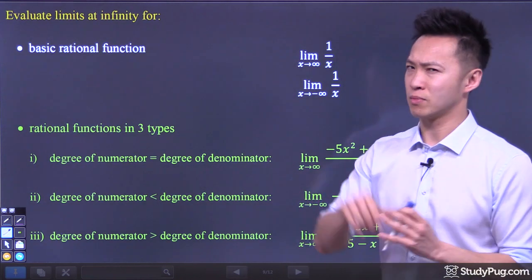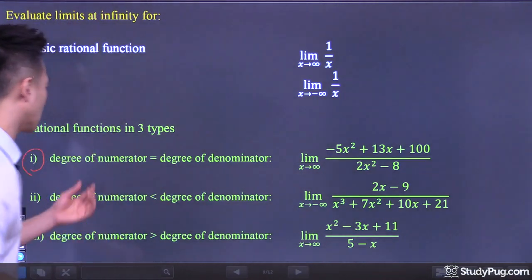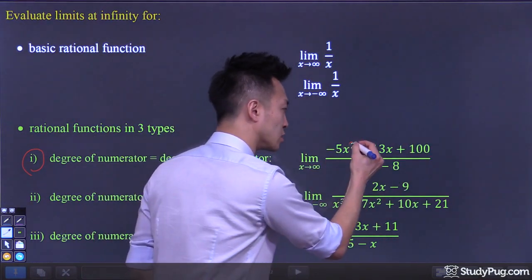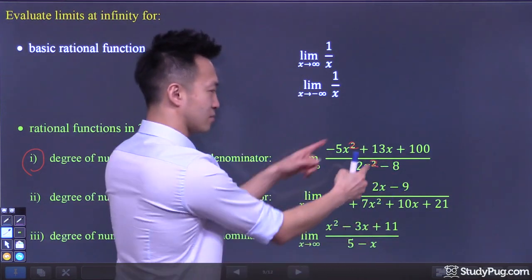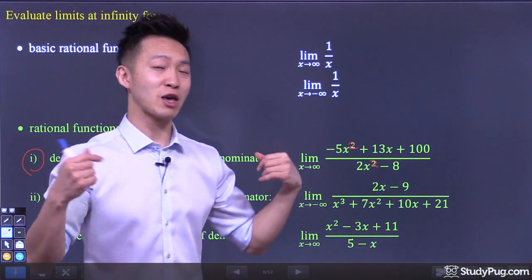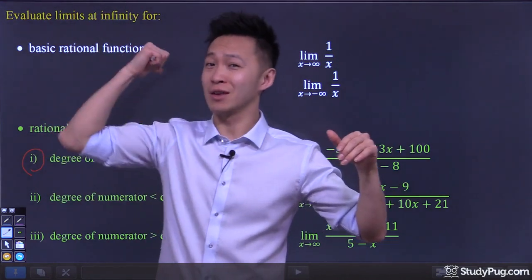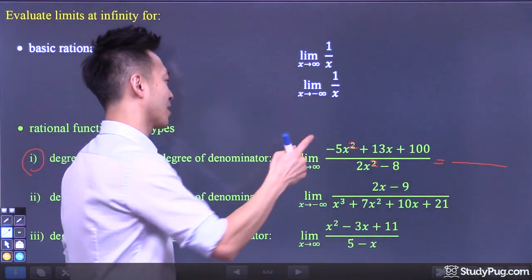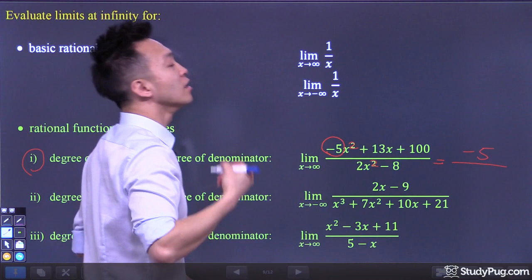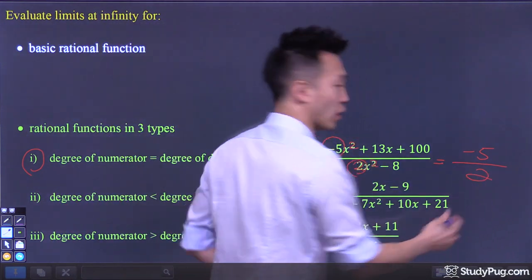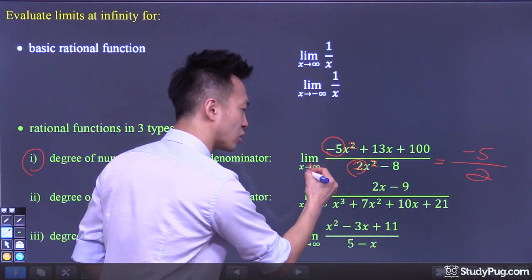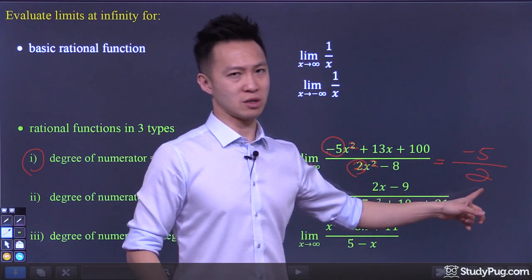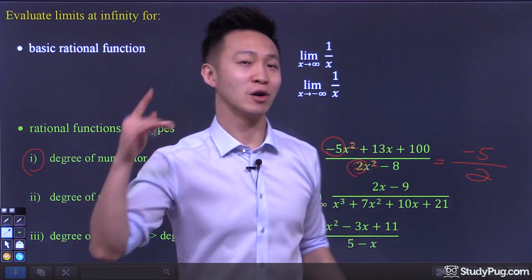Rational functions can be categorized in three types. Type 1 is when the degree of the numerator is equal to the degree of the denominator. For this rational function, the degree of the numerator is 2 and the degree of the denominator is 2. By using the highest power rule, which we covered in the previous introduction video, we can conclude that this type of limit is always going to be equal to the leading coefficient of the numerator — in this case negative 5 — divided by the leading coefficient of the denominator — in this case 2. Whether x is approaching positive infinity or negative infinity, this limit is always equal to that ratio.